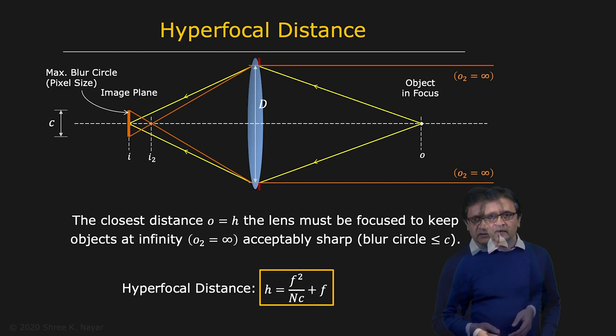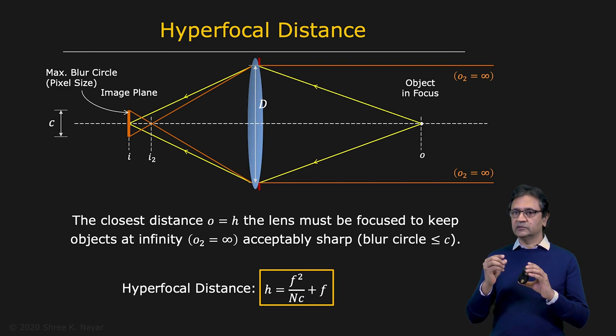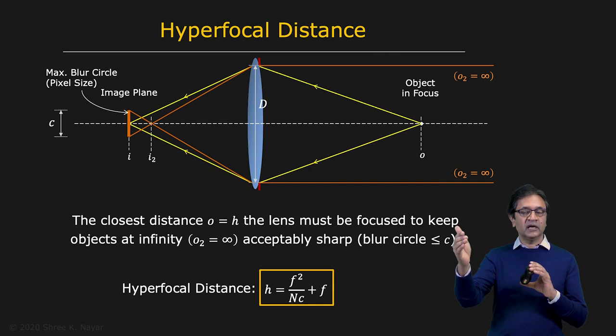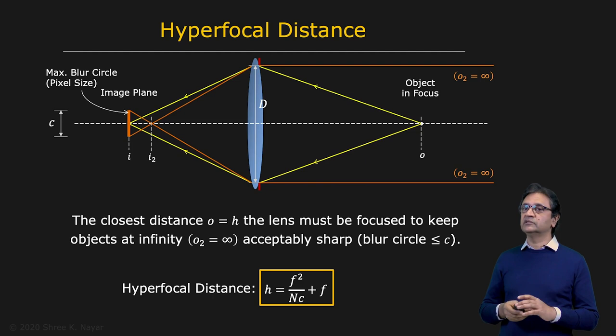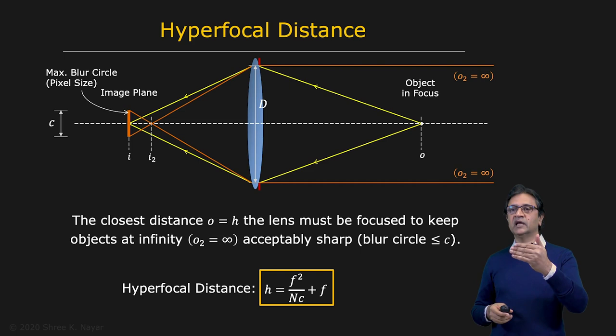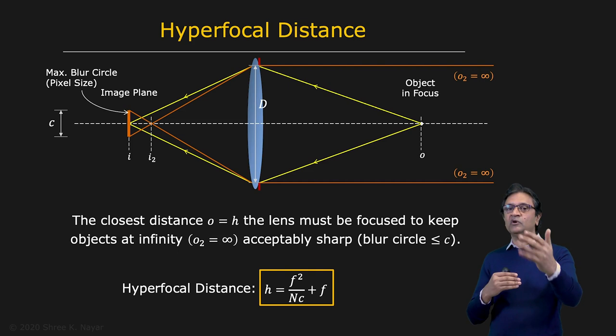The hyperfocal distance is an important concept. If you create an imaging system focused on the hyperfocal distance, all points beyond that are going to be in focus; it's only points closer to the lens that go out of focus. This is very useful in smartphone cameras — you set the focus at the hyperfocal distance so that beyond a certain distance, images are always well focused.